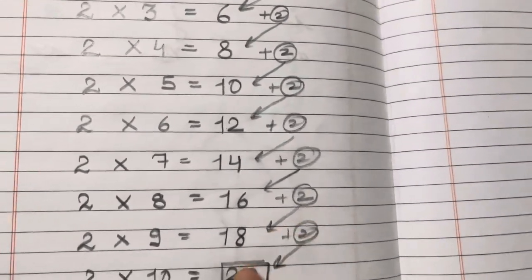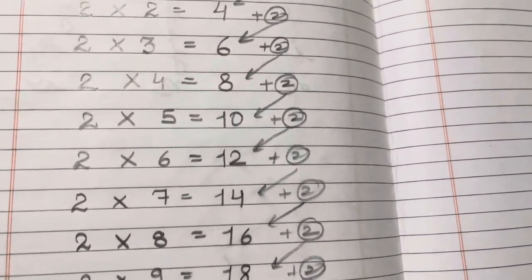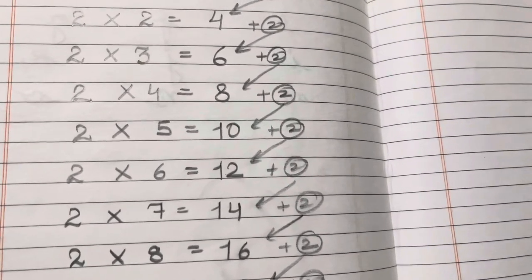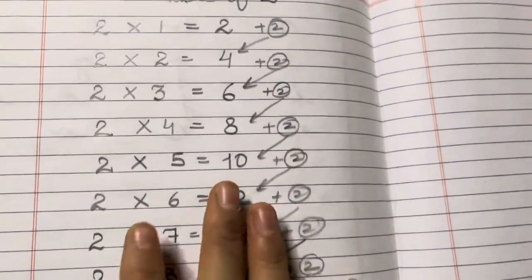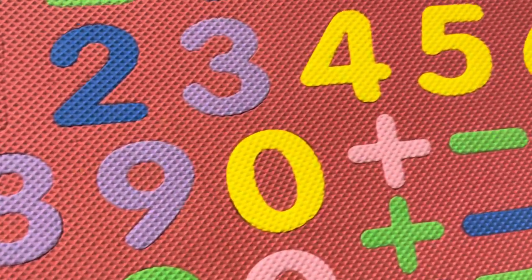So, like this, finally we will get 20. Now you can make any other tables like this. Share and subscribe for number learnings and alphabet learnings. Like the video and share to your friend.